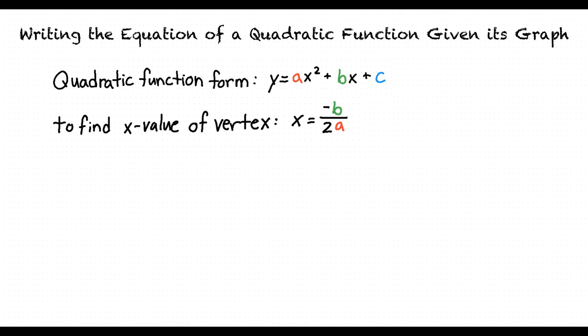How does this help us find the quadratic function's equation? To find the quadratic function of a graph, we have to find the unique values for a, b, and c that our function has. Once we have the values for a, b, and c, we can substitute them into the quadratic function form to create the unique equation of our quadratic function.